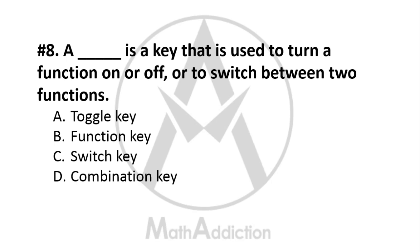Question No. 8: A dash is a key that is used to turn a function on or off, or to switch between two functions. What is this key called? Option A: Toggle key, Option B: Function key, Option C: Switch key, Option D: Combination key. The right answer is Option A — Toggle key. Examples include Caps Lock, Num Lock, and Scroll Lock. Pressing Caps Lock once activates capital letters; pressing it again turns that function off.